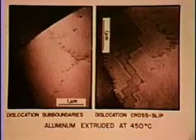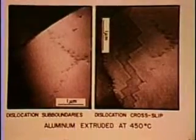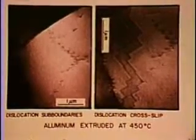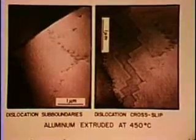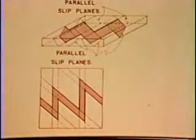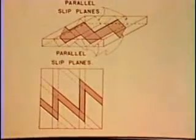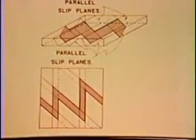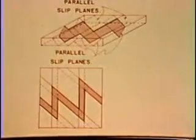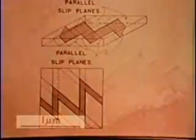The zigzag band on the right electron micrograph gives evidence of cross-slip of a screw dislocation in a foil of aluminum. Cross-slip is the change from one slip plane to another when the shear stress on the second plane is sufficient to cause the dislocation to glide on it. It is commonly observed in aluminum and in body-centered cubic metals.